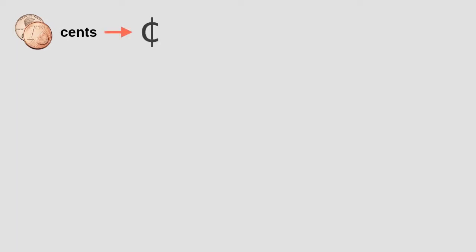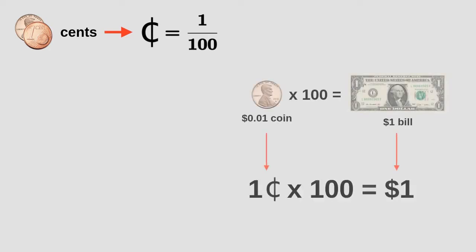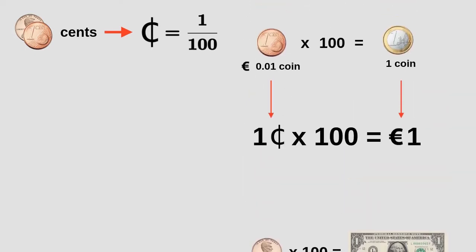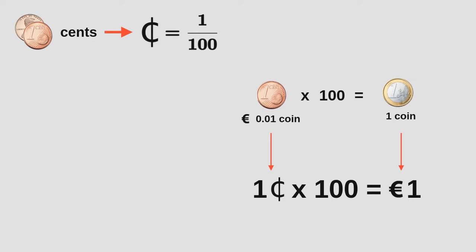There are also smaller denominations, generally in the form of coins. Coins are small metal pieces of money. Generally these smaller denominations are called cents. This is the symbol for cent. One cent is worth 100 times less than the monetary unit. For example, one hundred cents are worth one dollar, and one hundred euro cents are worth one euro. In many countries there are coins of one, five, ten, and twenty-five cents.